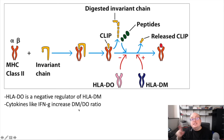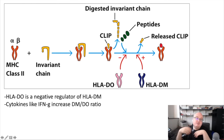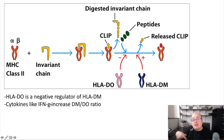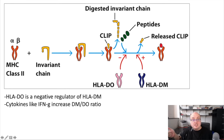Cytokines like interferon gamma increase the DM to DO ratio. If interferon gamma increases expression of DM, we have relatively more DM and relatively less DO. That means there's going to be more active DM that's not being inhibited by DO, so the more active DM we have, the more antigen loading we're going to have because more CLIP is going to dissociate. This is an example of how helper T cells can actually increase the process of antigen presentation, because helper T cells express a lot of interferon gamma. If they increase the expression of DM within dendritic cells and other antigen-presenting cells, they're going to increase the ability of those cells to present antigen via MHC class II, overall revving up the immune response.